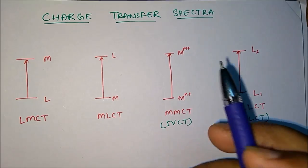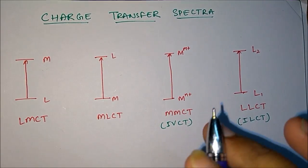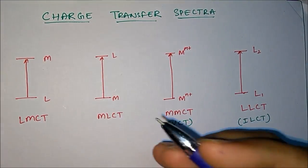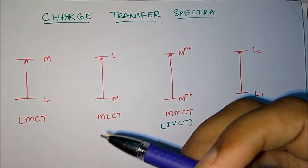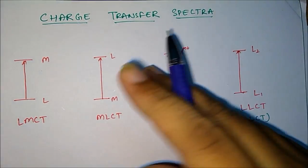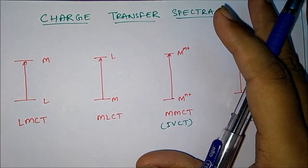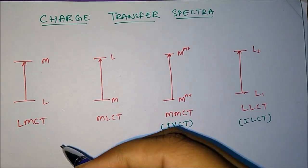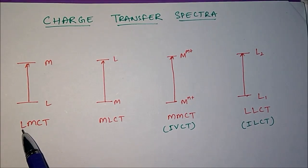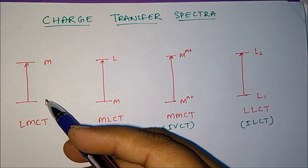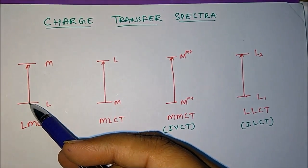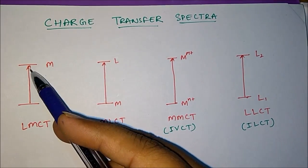In this topic of charge transfer spectra, there are four different types of charge transfer. Charge transfer means the transfer of electrons - electrons being transferred from one place to another. There are four types of charge transfer spectra. The first one is called LMCT or ligand to metal charge transfer, which signifies that electrons are being transferred from ligand to metal - a transition of electrons from the ligand orbital to the metal orbital.